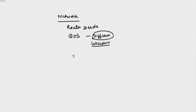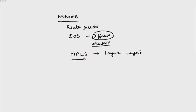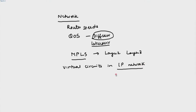Let me go into a bit more detail on something called MPLS — Multi-Protocol Label Switching. Some people view it as Layer 2, some as Layer 3; it actually works in between Layer 2 and Layer 3. What MPLS tries to do is impose virtual circuits in an IP network. If you recall, IP networks are based on datagram forwarding, which is very different from virtual circuits.